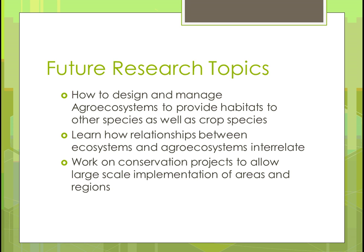What are some future research topics? One is how do you design and manage a system to provide habitats that will attract other species and work well with the crops we want to grow? How do relationships between ecosystems and agroecosystems interrelate? We understand ecosystems but haven't done enough experimentation in agrosystems to see how we can make them more closely emulate natural ecosystems. We also need to work on conservation projects that allow large-scale implementation across areas and regions.